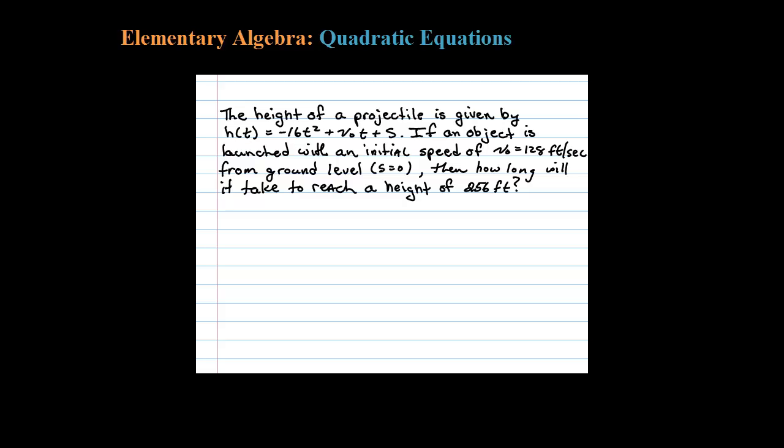Here it says the height of a projectile is given by this formula. If an object is launched with an initial speed v₀ of 128 from ground level (s = 0), then how long will it take to reach a height of 256?